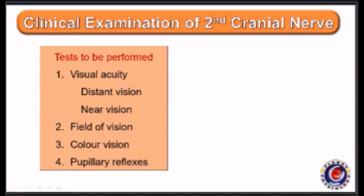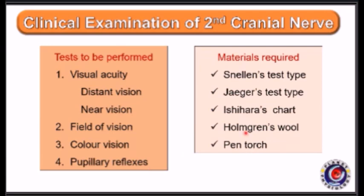Visual acuity for distant and near vision, field of vision, color vision, and pupillary reflexes. For this we will require a Snellen's test type, Jaeger's test type, Ishihara chart, convergence wand, and pentorch.